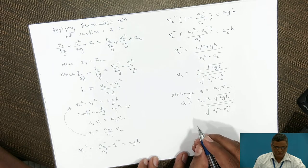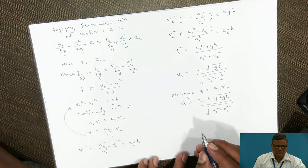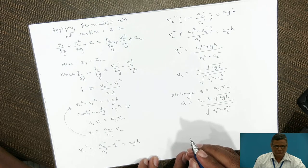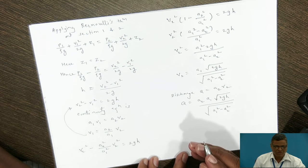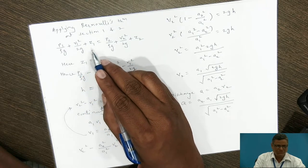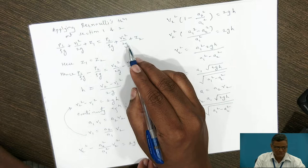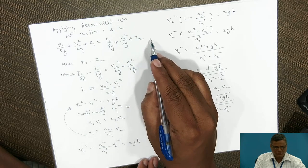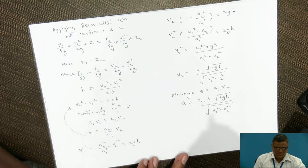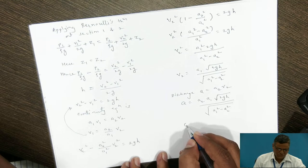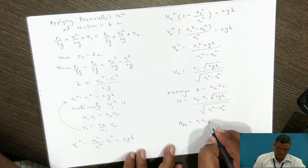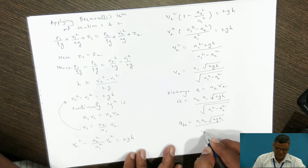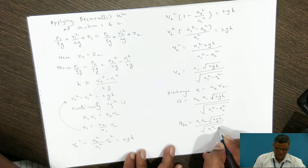Since Bernoulli's theorem was applied without modification — not accounting for losses — the discharge Q = A1·A2·√(2gH) / √(A1² − A2²) represents the theoretical discharge, Q_theoretical.